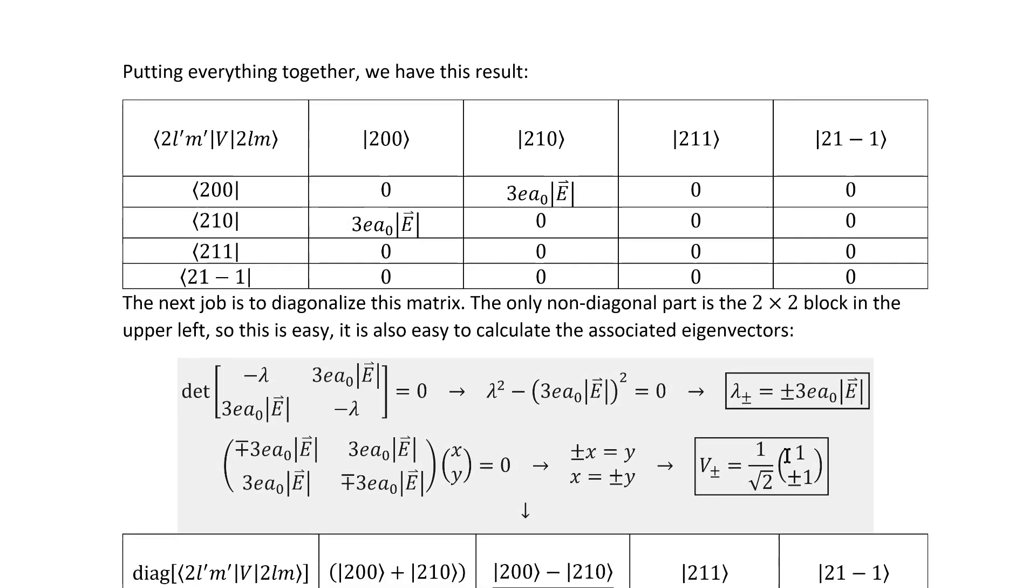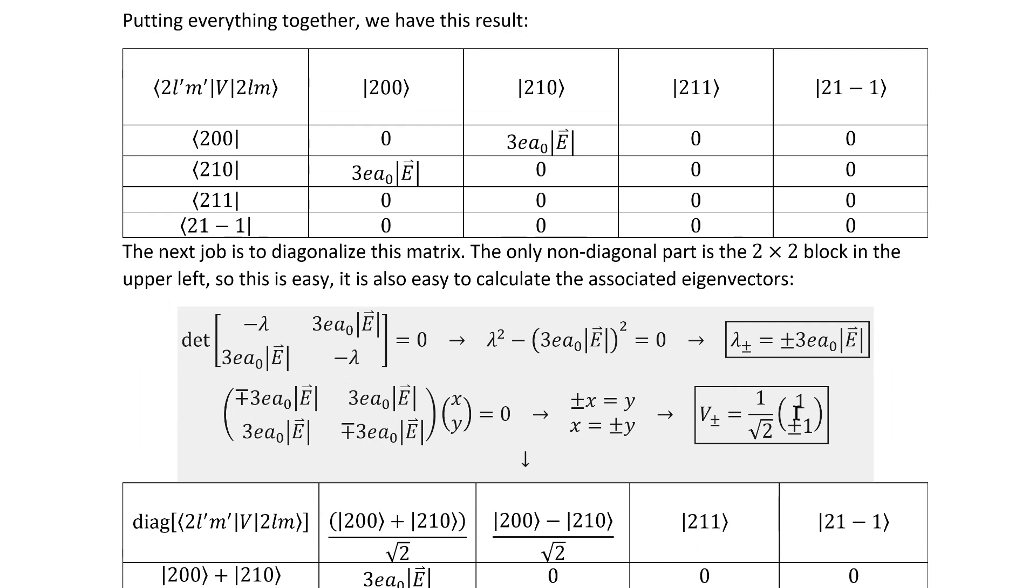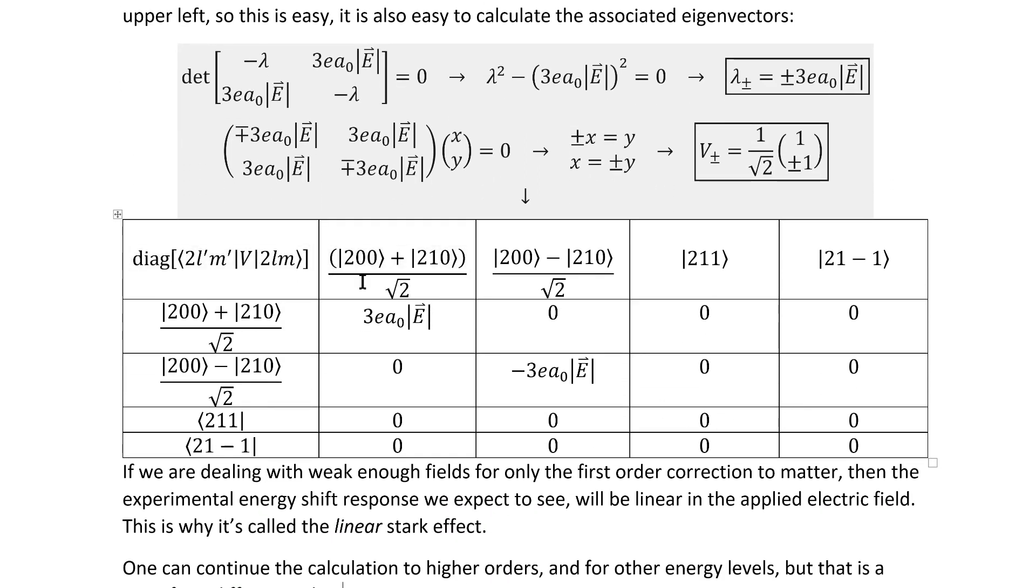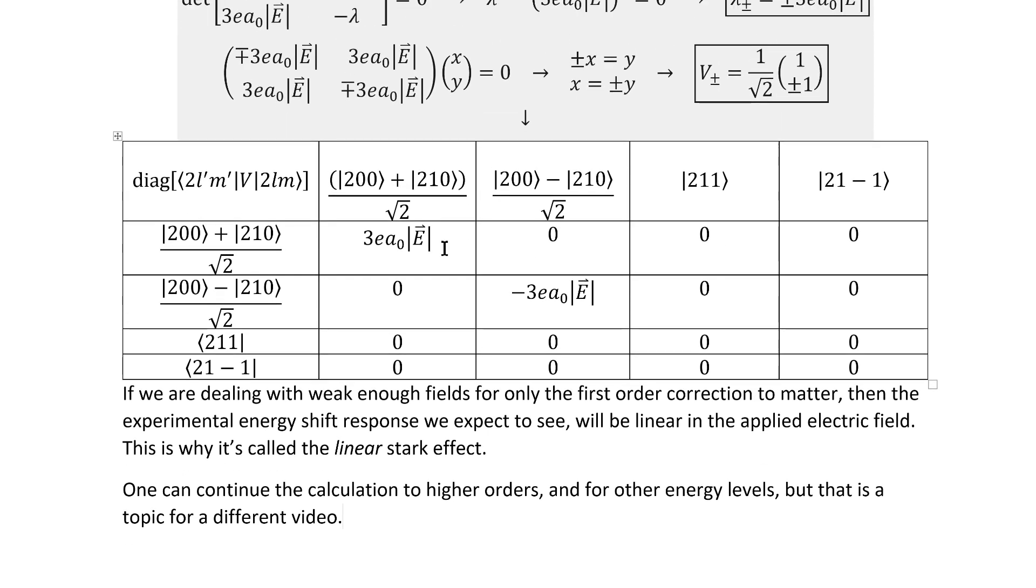Straightforwardly, we arrive at these eigenvalues and these normalized eigenvectors, which means our actual energy corrections are given by this matrix here, specifically the diagonal elements of it. In this matrix, we do in fact see that part of the degeneracy is broken.